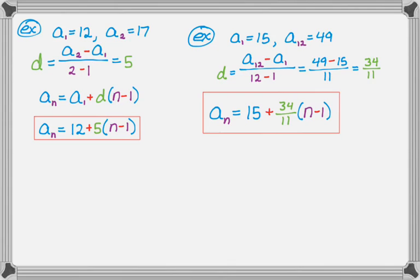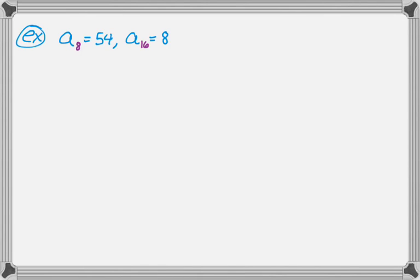So we're going to look at one more example, because really these aren't super complicated. So we'll do one more example, and then the video will be over. So say we know the 8th term and the 16th term of the sequence, so this is very different. We don't know the first term.